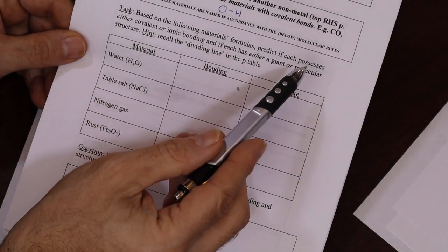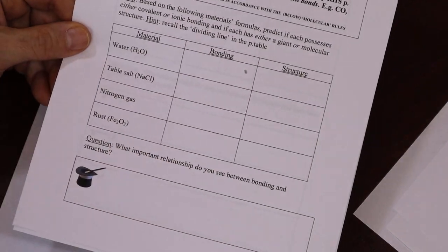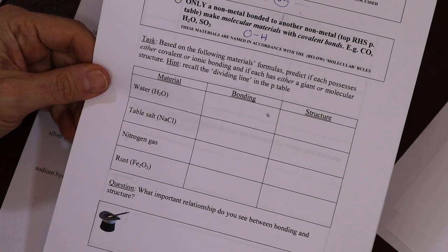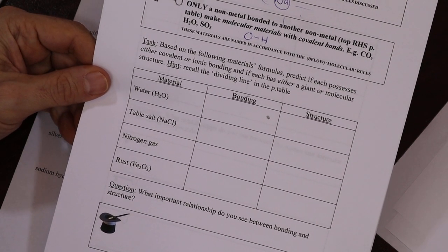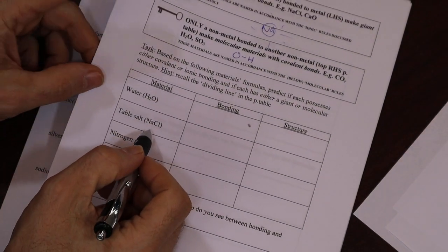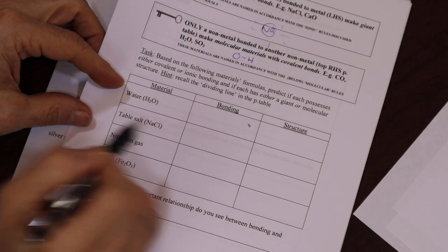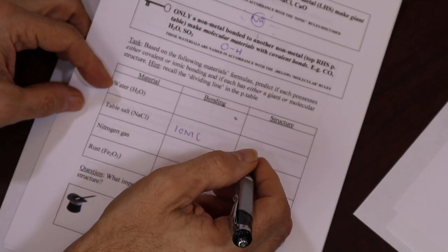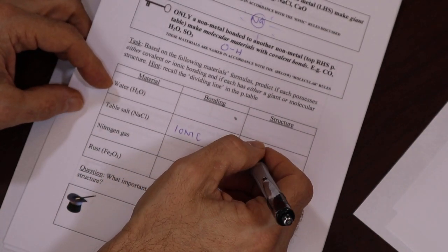Okay, so a nice easy one to start. Table salt, obviously table salt, plus minus ions, lefty and righty, so that's ionic. Structure, as we know, we've seen the crystals of table salt in our cupboard or our fridge or freezer, wherever. Why would you keep salt in the fridge? I don't know.